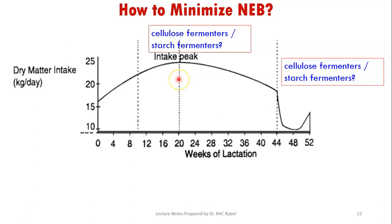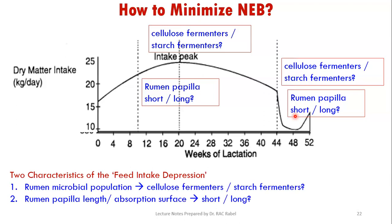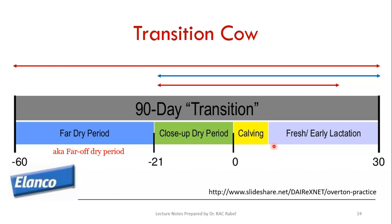During early lactation, you would expect predominantly starch fermenters because the animal receives a lot of concentrate feeds, whereas during the far-off dry period it's predominantly cellulose fermenters. In terms of rumen papilla, the far-off dry period would have short papilla. An experiment showing papilla of different lengths — shortest in the middle, longest at the ends — illustrates these differences. The three stages of papilla length correspond to the different phases of the production cycle.